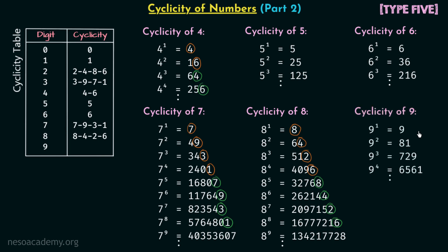Focusing on the digits at the unit place for powers of 9, we have 9, then 1, and again 9, then 1. So the cyclicity of digit 9 is 9, 1. Calculating further you will find 9, 1, 9, 1 at the unit's place.